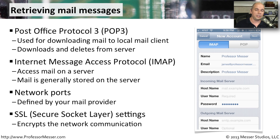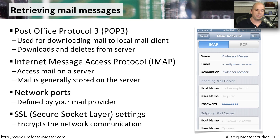You might also have the option for encryption when you're transferring this mail. And because you're on a mobile device, this can be especially useful on wireless networks, especially open wireless networks in hotels or coffee shops. You'll see this referred to as SSL — Secure Socket Layer. That's the encryption process. So if you have the option to enable SSL when sending or receiving email, make sure you take advantage of that.